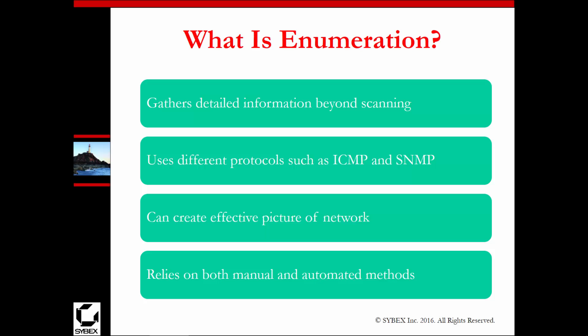Enumeration is a way to gather detailed information way past scanning. We're past the IPs and port numbers — looking at what's up, what's down, what can we connect to, can we ping, can we send ARP requests, can we try some basic connectivity strings with SNMP. Enumeration uses different protocols, not just the typical protocols used for scanning.